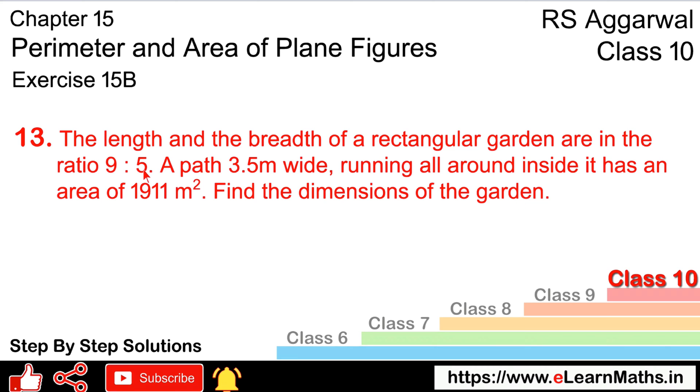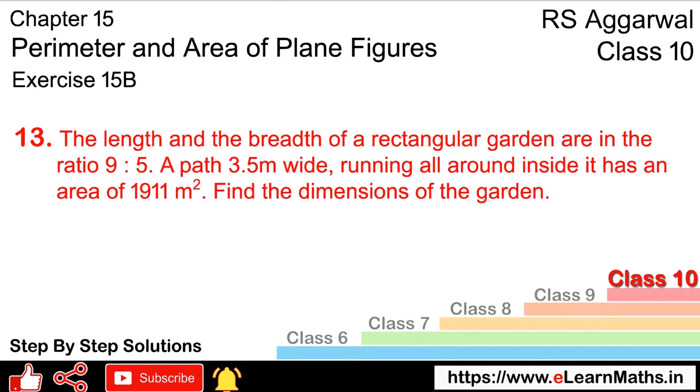We need to find the dimensions, the length and breadth of the garden. This is our rectangular garden with the ratio given. And here is our path, 3.5 meters wide, running inside. The path is 3.5 meters on all sides. The ratio given is for the outer dimensions, 9:5, because the path is inside.